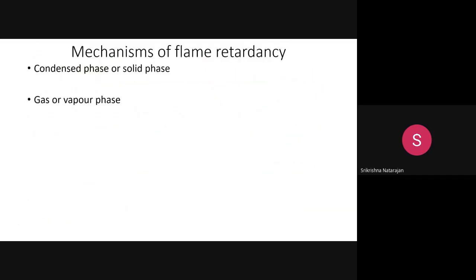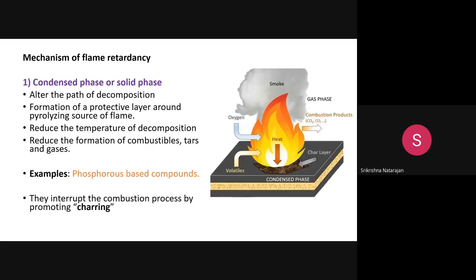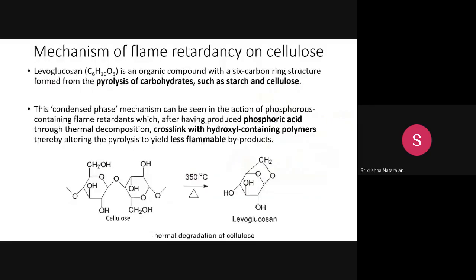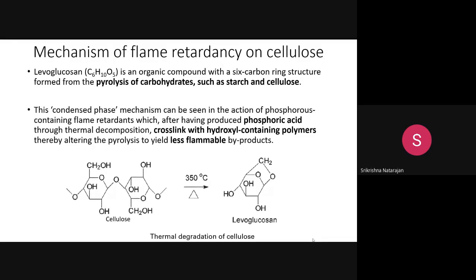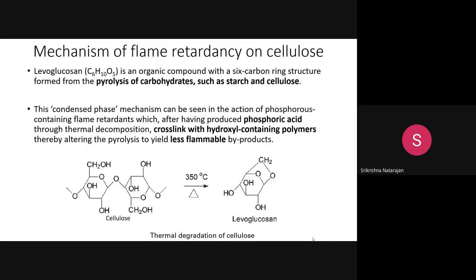We then discussed the mechanisms of flame retardancy. Two mechanisms are extremely important: one is the condensed phase or solid phase. The main example for this is phosphorus-based compounds. We also discussed how cellulose is provided flame retardancy and the importance of levoglucosan — an effective flame retardant for cellulose fibers should hinder the formation of levoglucosan.